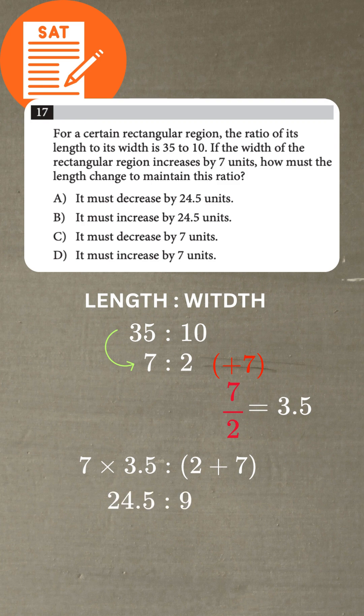To keep the shape perfectly proportional, the length must increase by 24.5 units. Did you get it right? Drop a comment below!